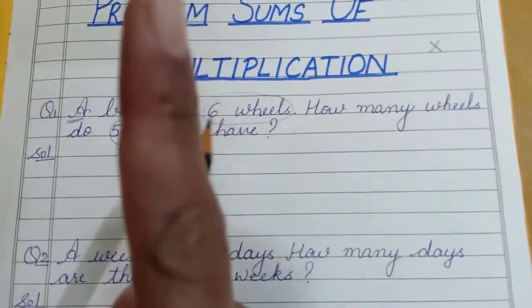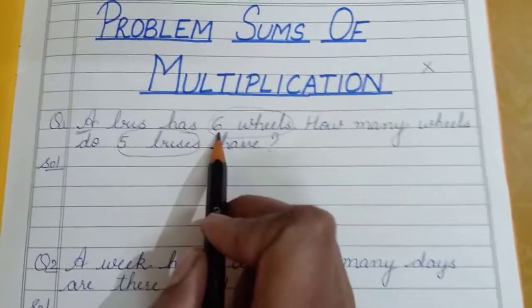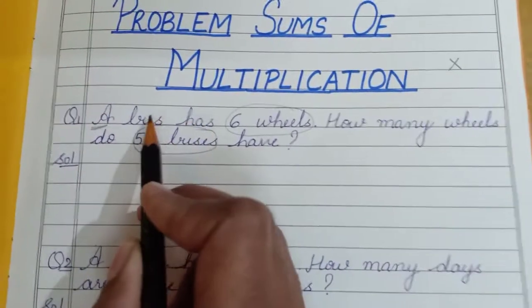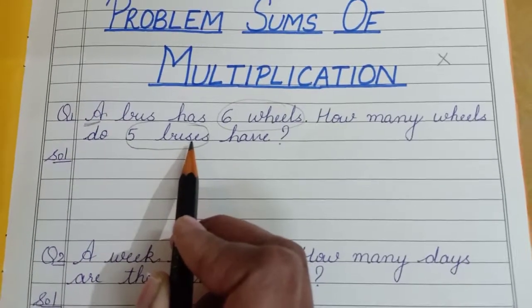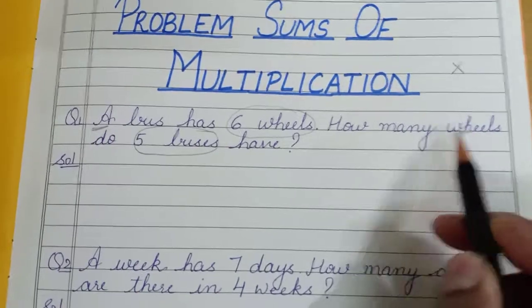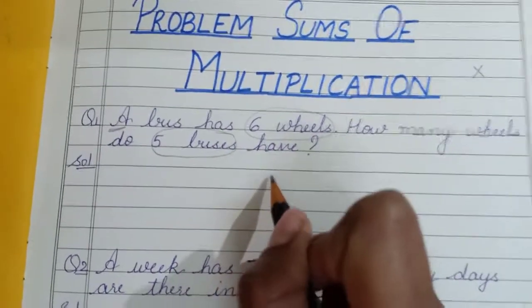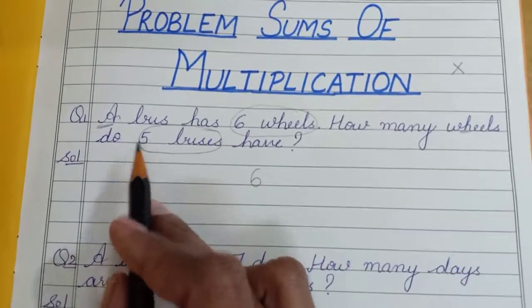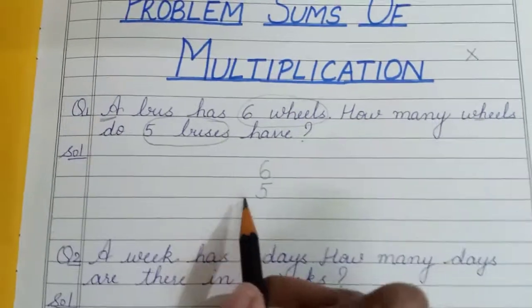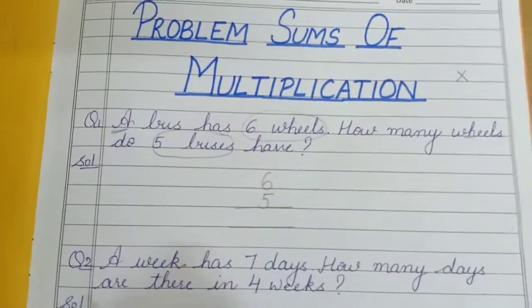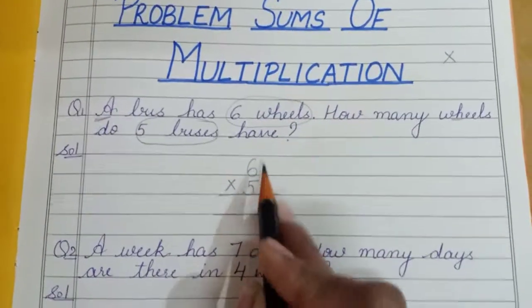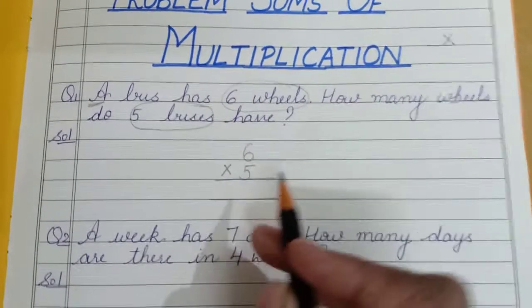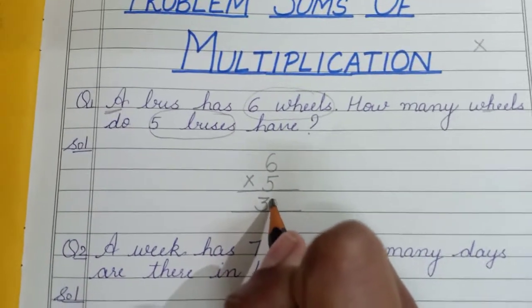A bus has six wheels — we're talking about one bus only. One bus has six wheels and they want to know how many wheels do five buses have. After telling about one bus they want to know about five buses. So first of all we will write the first number, that is six. Next number is five — you will write five. Then you put the multiplication sign and multiply. Either you can do six fives are, or five sixes are.